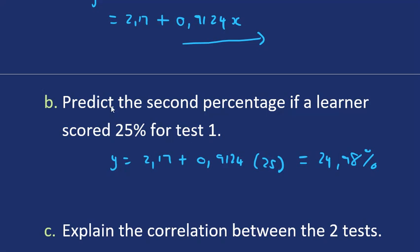When we use the regression line to predict values, that is called interpolation. We're using the regression line to predict values within our range. If you're going to predict values that are way outside our range, then that's extrapolation. But here we were using 25%, which is within the range of values that we're given in the first place.